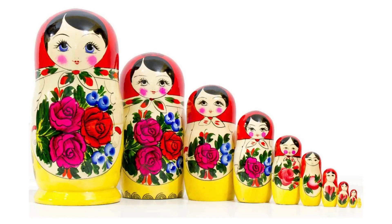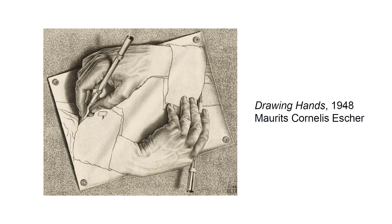Let me show you a few examples of recursion. The first one is Matryoshka — that's the ultimate example of recursion. You have a pattern that repeats itself, that calls itself in a smaller fashion, that calls itself again and again until potentially infinity. Here's another example from one of my favorite painters, Morris Cornelis Escher — that's 'Drawing Hands.' Here you have a hand that draws another hand, that draws the initial hand, in this sort of infinite recursive process.